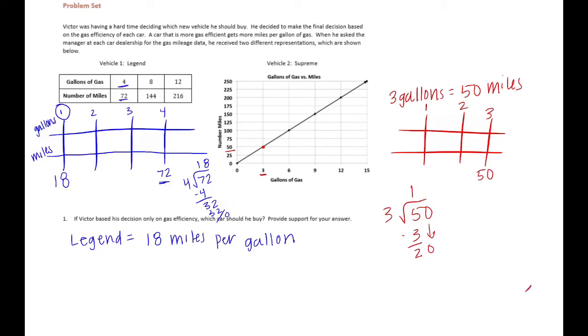Let's see, three goes into 20, let's see, three times six is 18, three times seven would be too big. So minus 18, we'd have two, and there's nothing to bring down. So we have 16 and two-thirds miles.